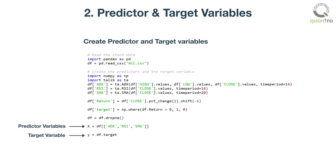As you can see, we have defined certain time periods for each indicator. You can modify these numbers — for example, to 7 days instead of 14 days — and check the changes in model predictions. The dropna method is used to drop all the NA, or missing data rows, from the Python data frame DF.